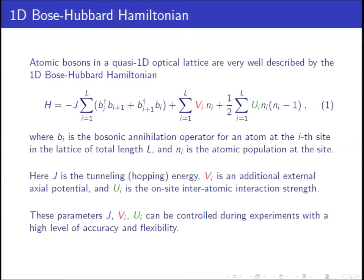Atomic bosons in a quasi-one-dimensional optical lattice are very well described by the one-dimensional Bose-Hubbard Hamiltonian, given by equation 1. In this Hamiltonian, capital J is the tunneling energy, capital V is an additional external axial potential, and capital U is the on-site interatomic interaction strength. These parameters can be controlled during experiments with a high level of accuracy and flexibility.